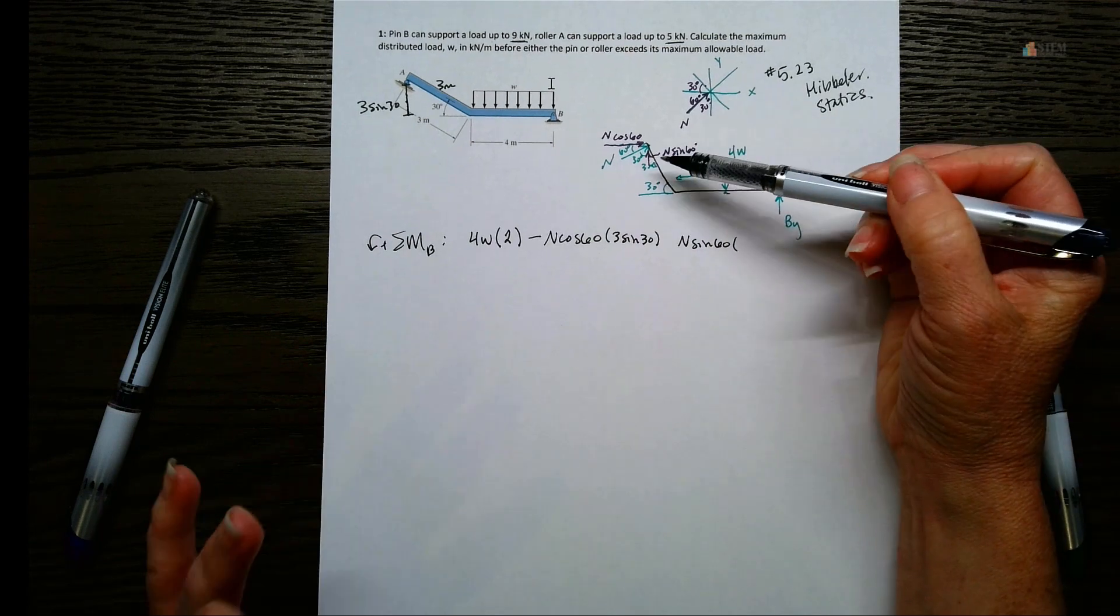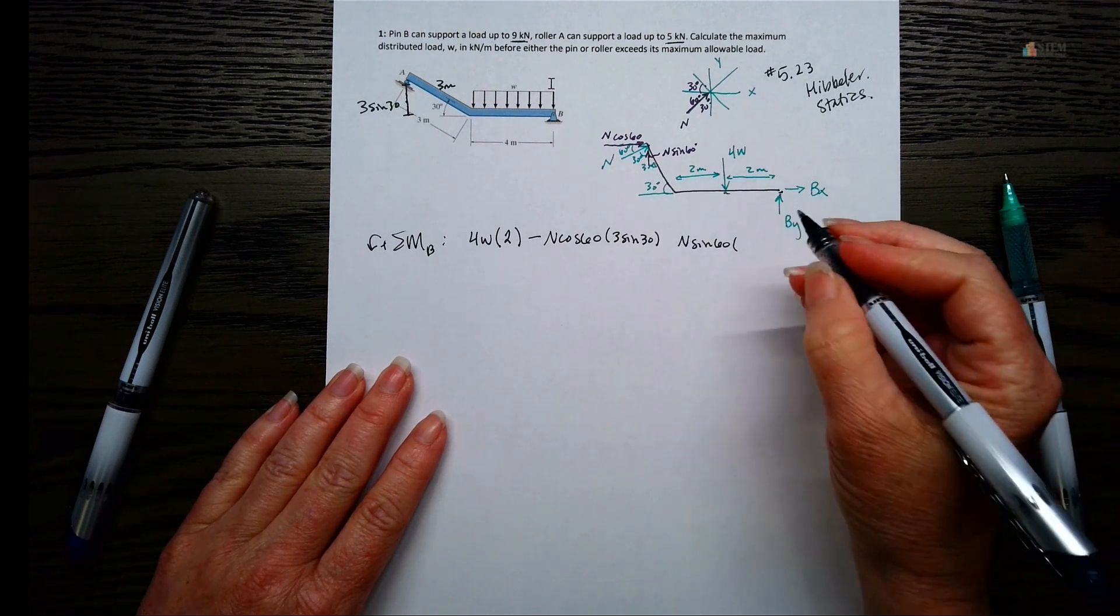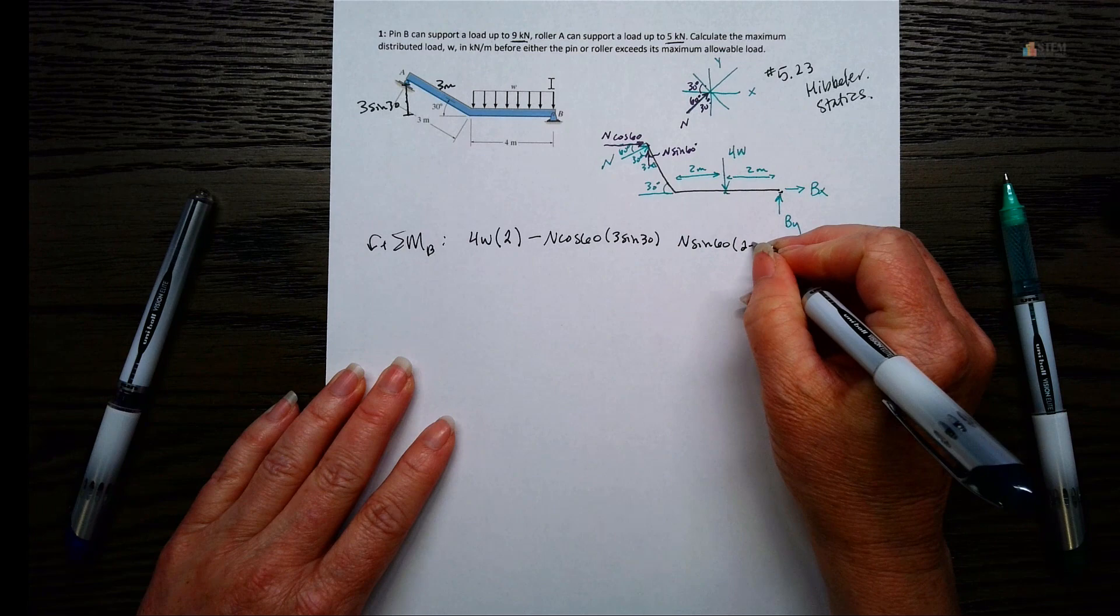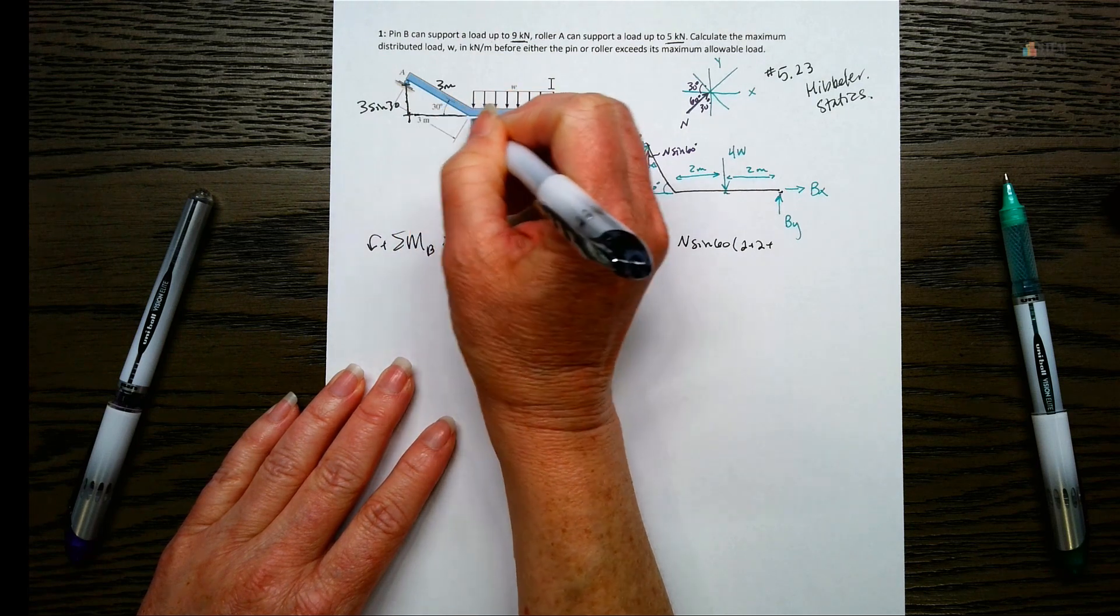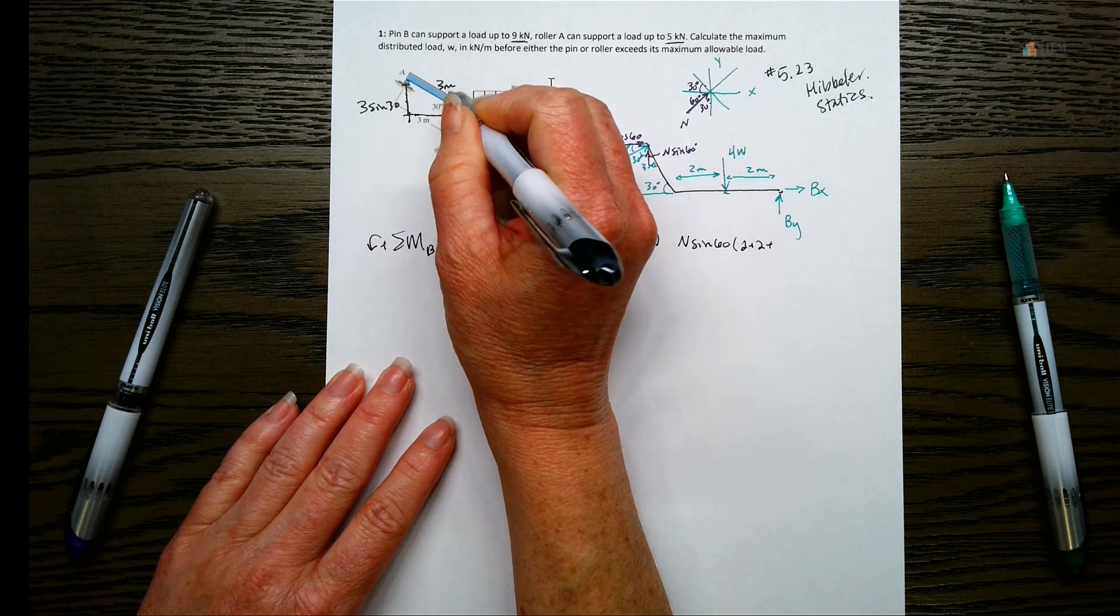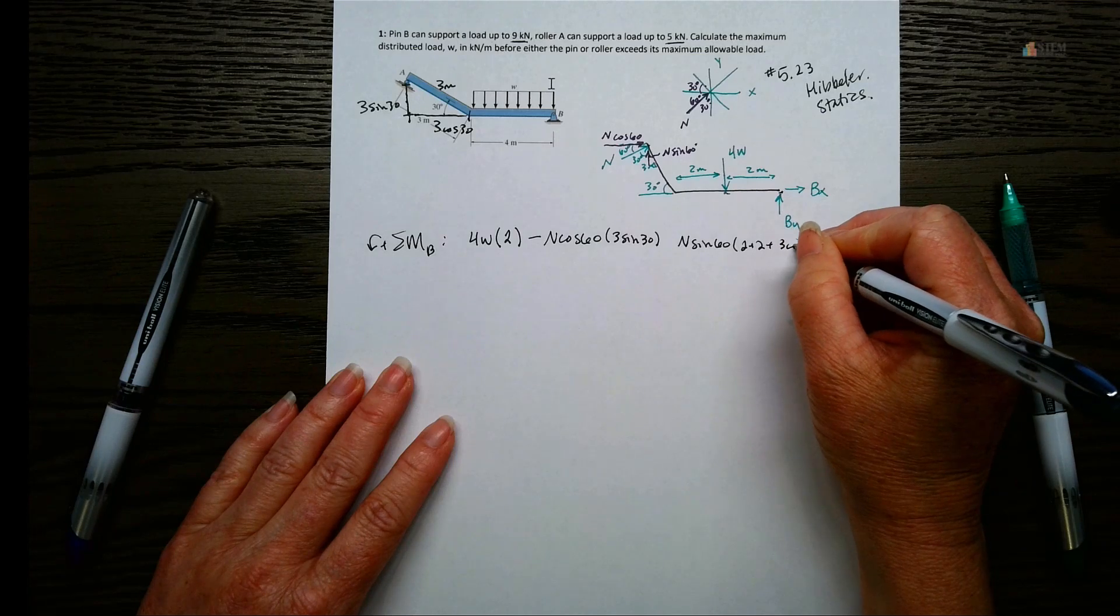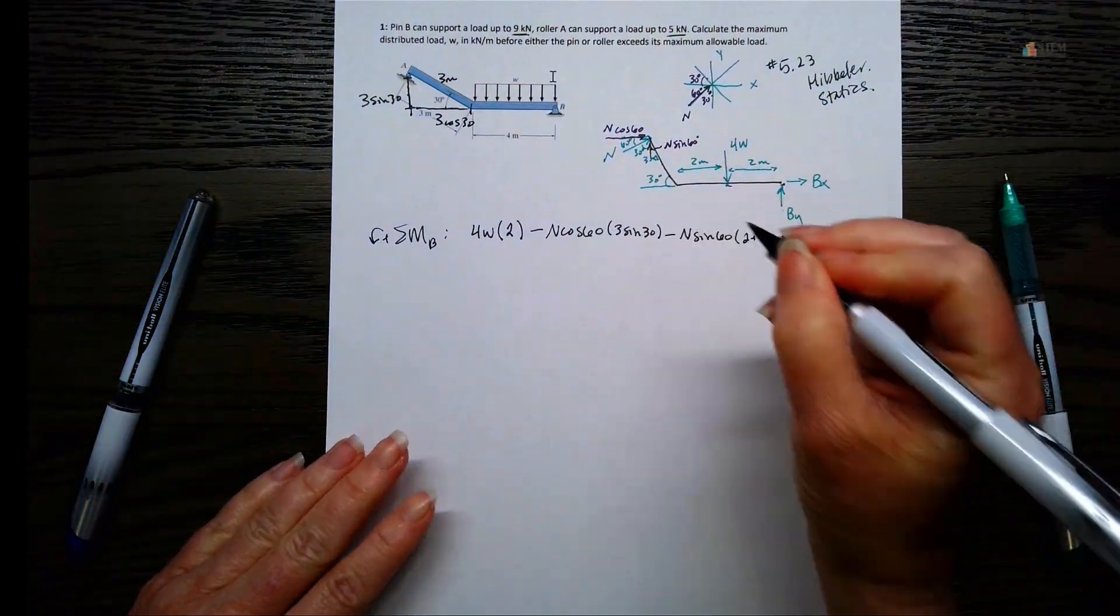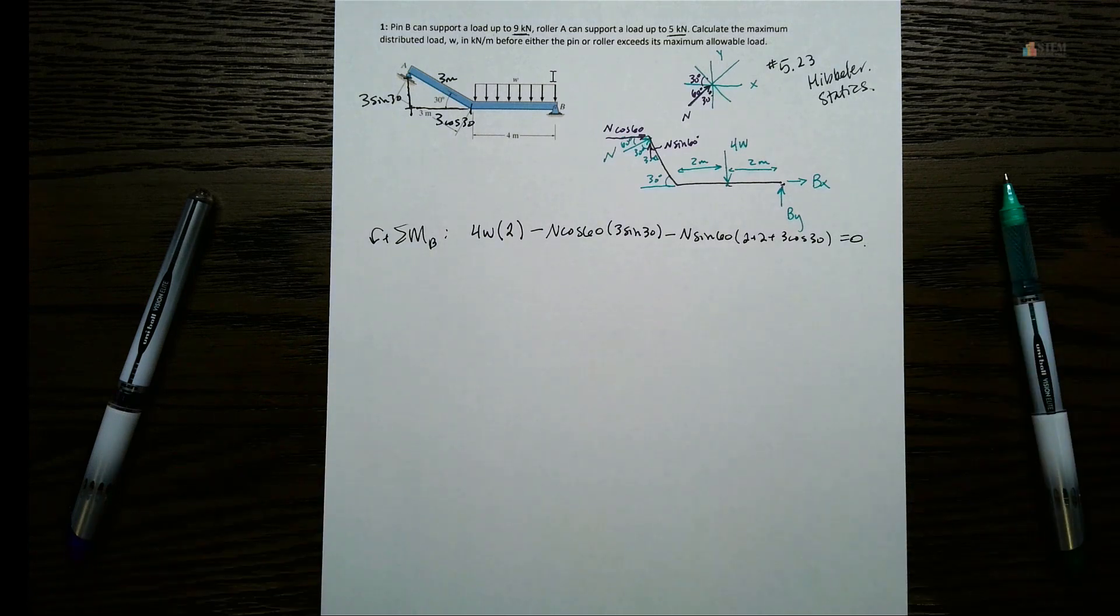And then we need to do the same thing with this Y component. So force is going to be N sine 60. And this is a vertical force. So I need a horizontal distance. So I need to go from here to over here. So that then has to be the 2 plus 2 plus this X component here, from here to here. So this component here, since this is 3, this has to be 3 cosine 30, because this is adjacent to 30. So I have 2 plus 2 plus 3 cosine 30. And then check your sign. So again, this is pushing up. That's going to be clockwise. So it's negative. And then set it to 0.